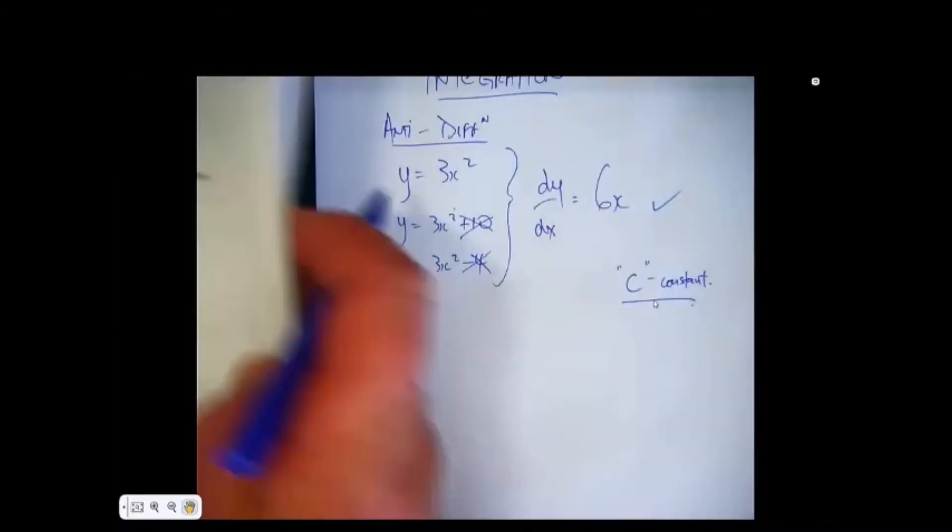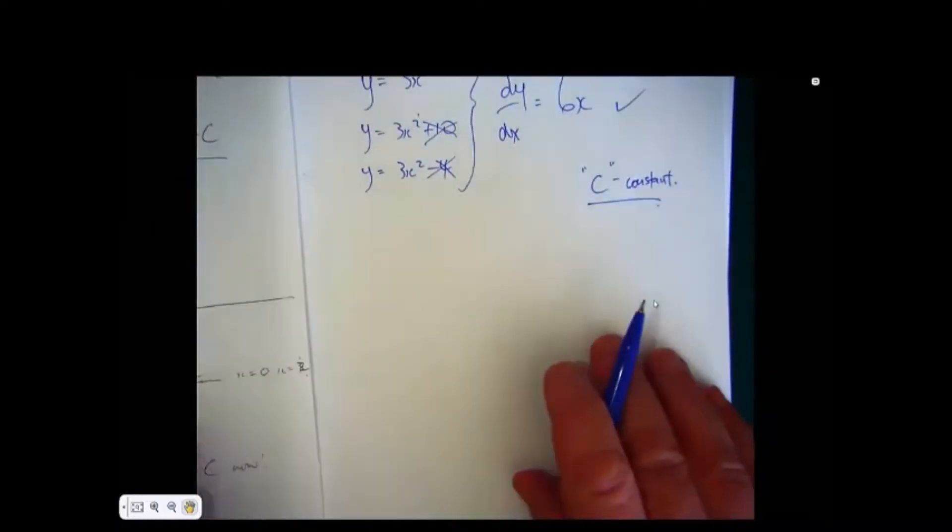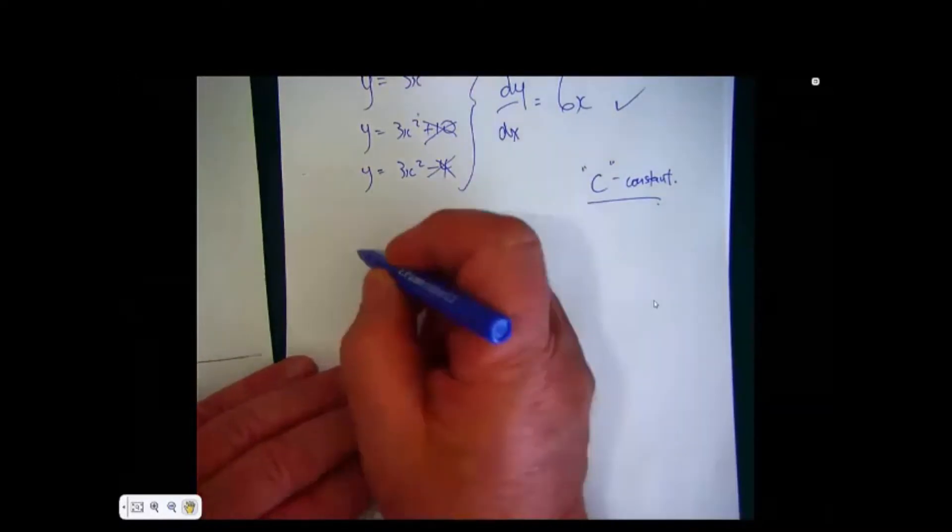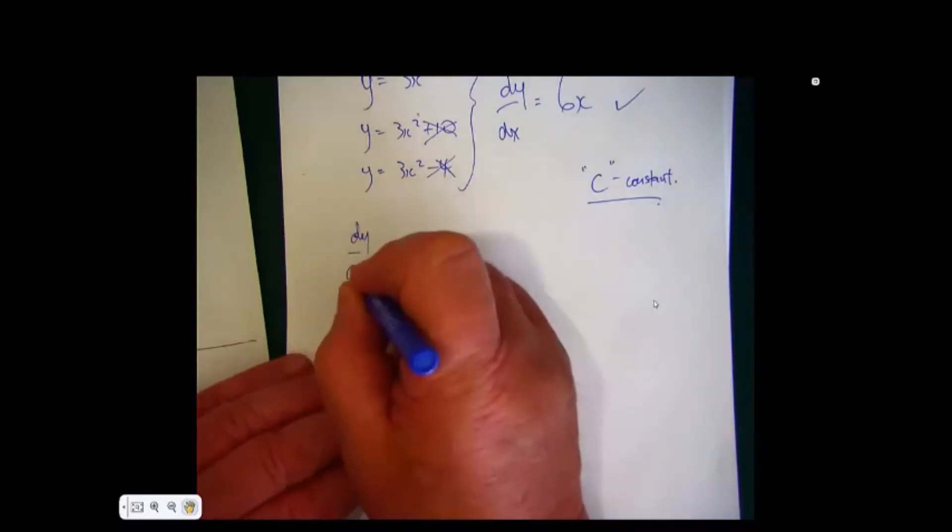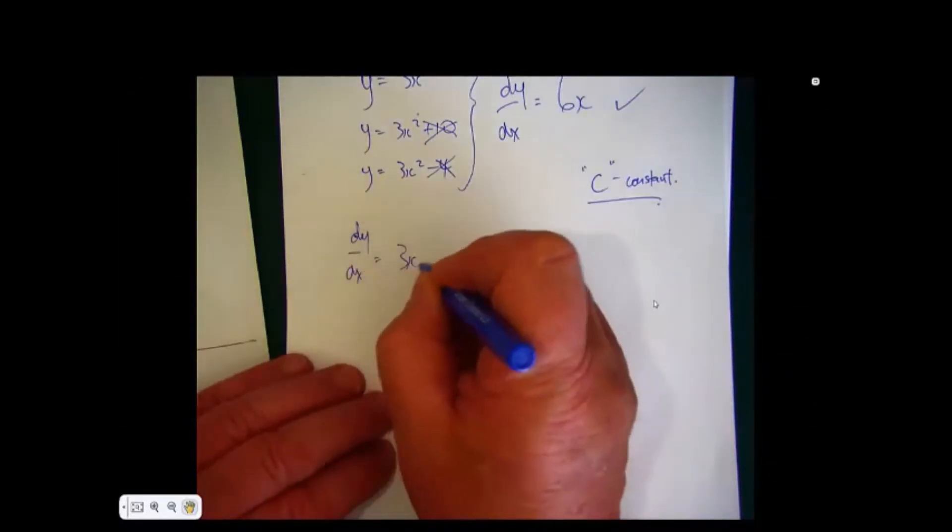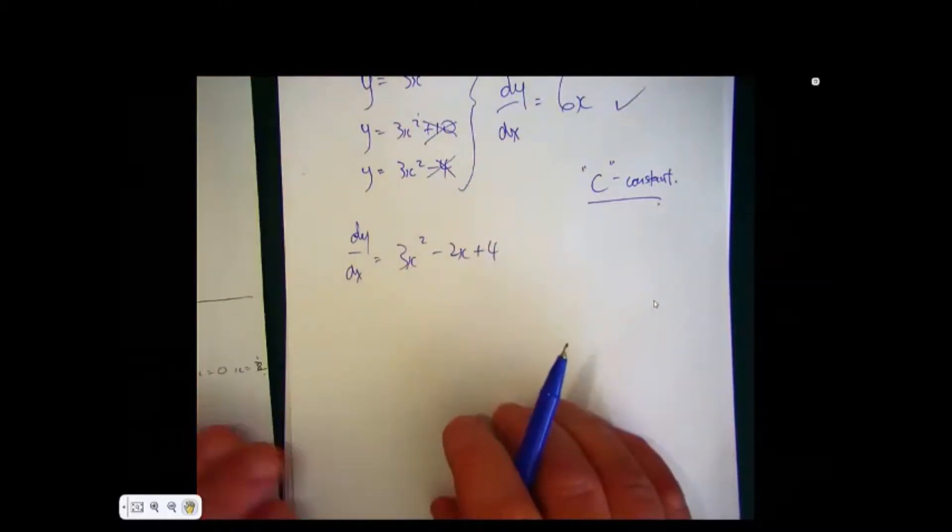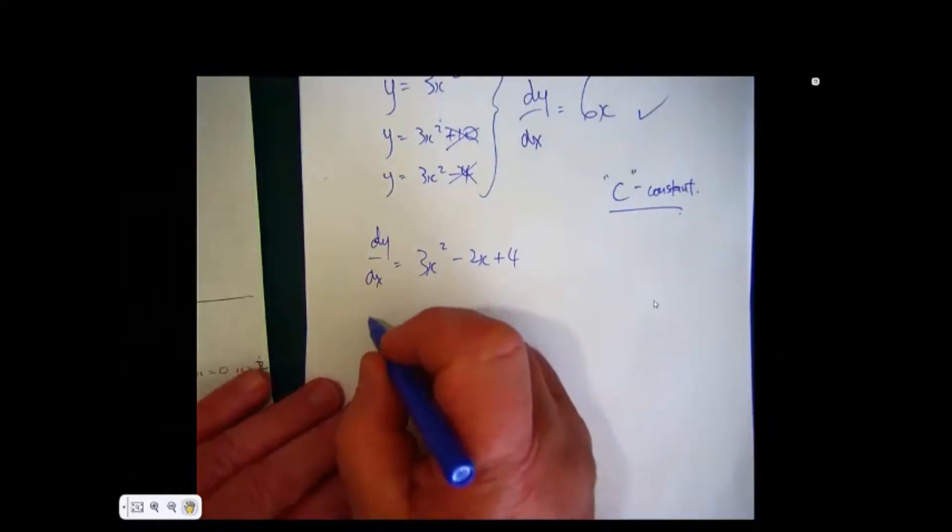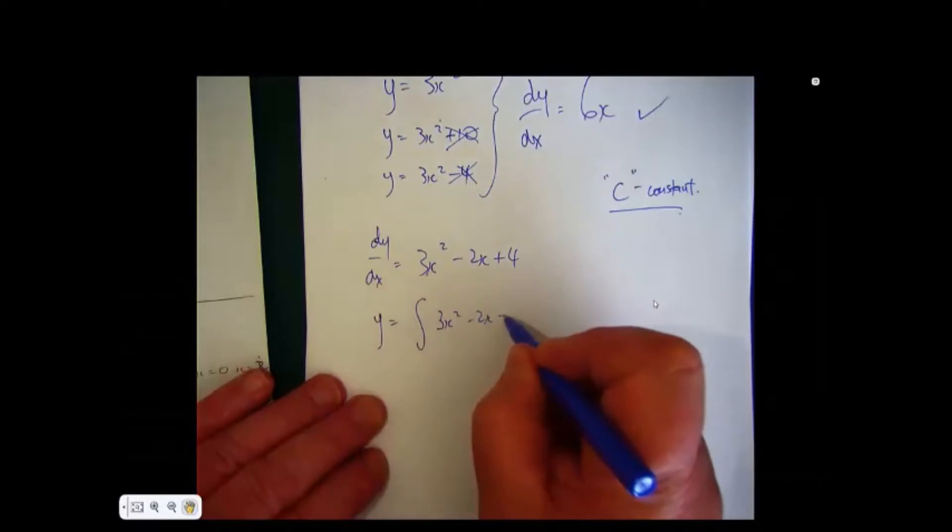Now let me show you one that I've already worked out. If the examiner says, okay, the differentiated form is dy/dx equals, for example, 3x squared minus 2x plus 4, can you integrate this to find what the form is? Then y will equal the integral of 3x squared minus 2x plus 4, with respect to x.